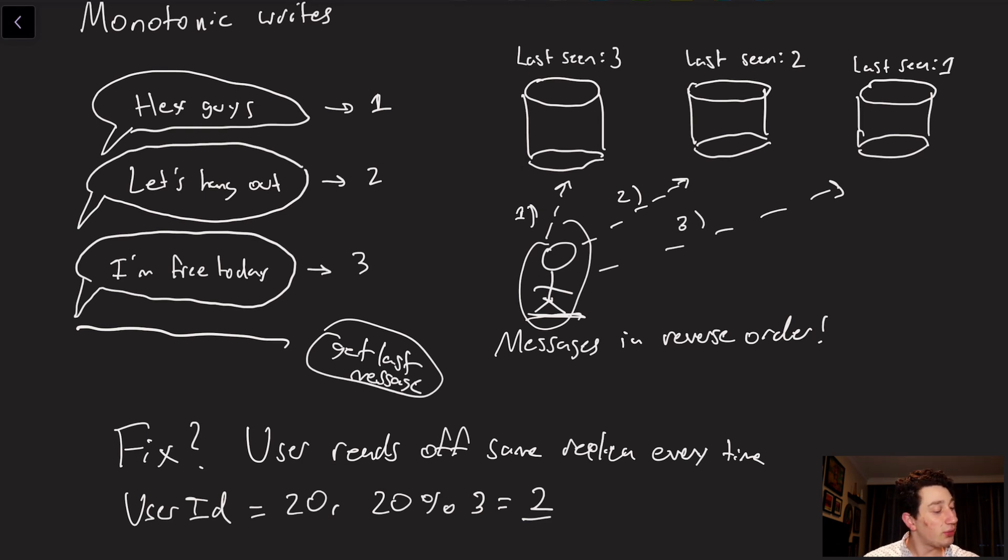But then what's going to happen is his next read, where he clicks get last message again because he wants to see if there's anything new, is going to return message number two, let's hang out, because that's the one with ID two. And then finally, he's going to do it one more time for a replica that's only seen message one as the last one. And now he's going to see Hey guys. So effectively, even though it started out as if he had seen all three of those messages, what's happening is our reads are effectively going back in time, and things are coming in backwards, because we're reading from replicas that are progressively less updated. And that is obviously going to be a pretty big problem.